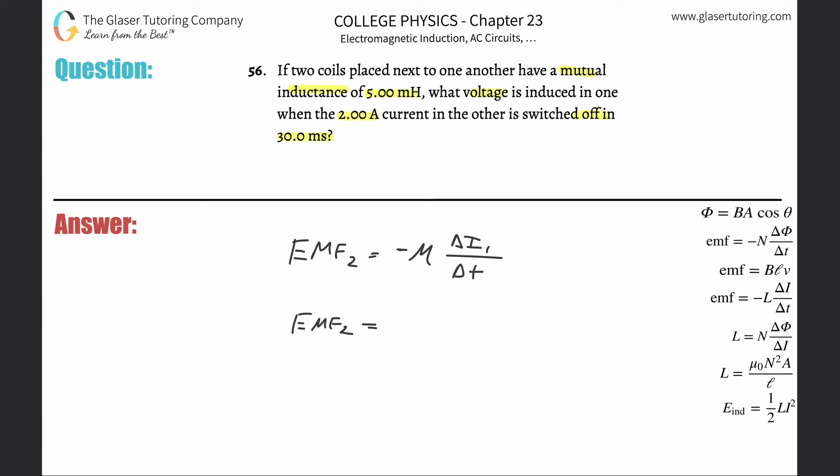The mutual inductance they told us was 5 millihenries, so that's 5×10⁻³ henries. The current was 2 amps, and the change in time was 30 milliseconds, so that's 30×10⁻³ seconds.